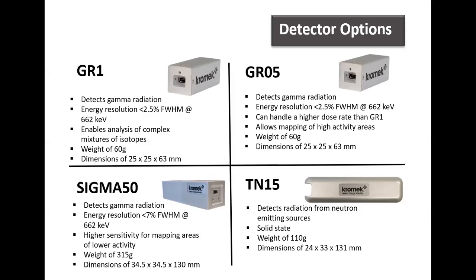The Sigma family of detectors also has a small form factor and lightweight design, making it ideal for aerial and unmanned mapping. They utilize either a two-inch or one-inch cesium iodide scintillator alongside silicon photon multiplier technology — a well-established technology built at Chromec for over eight years. The Sigma family is most effective in areas with low activity due to its very high sensitivity. The TN15 builds on this lightweight scintillator and silicon photon multiplier technology as a solid-state neutron detector equivalent in sensitivity and accuracy to helium-3.